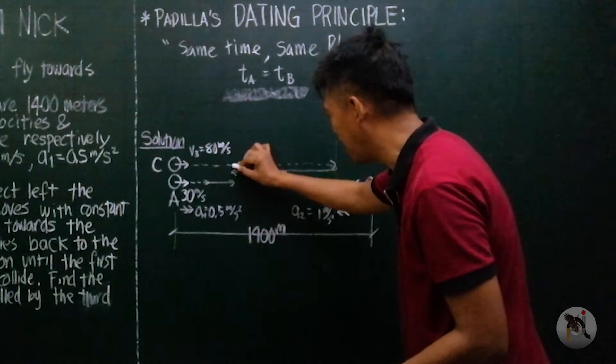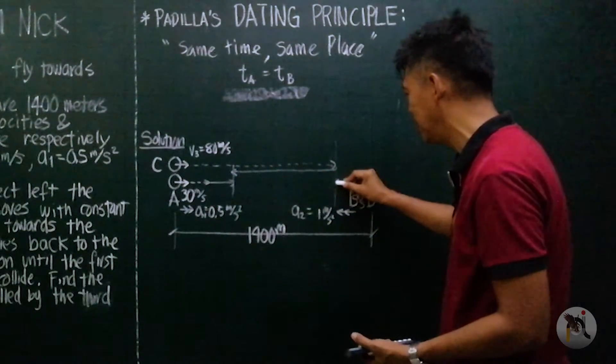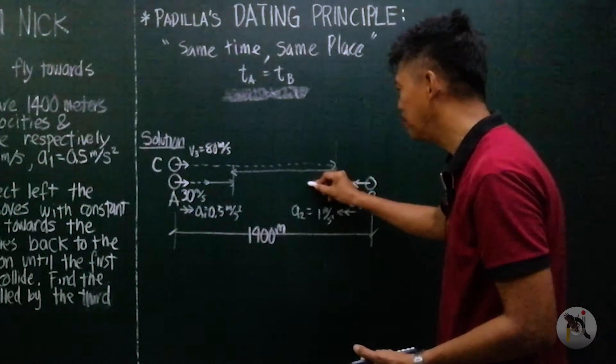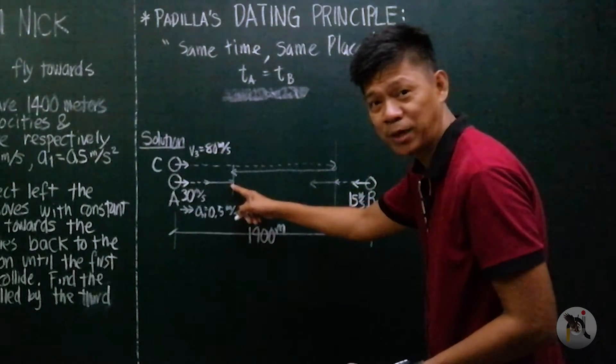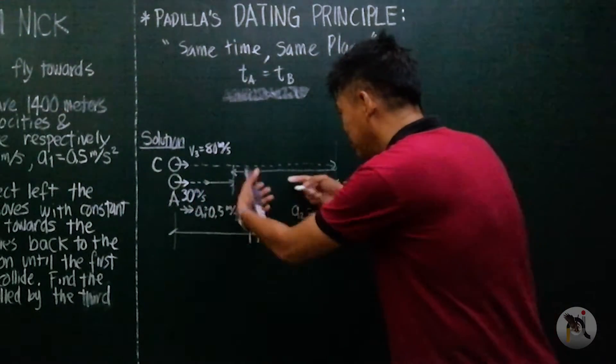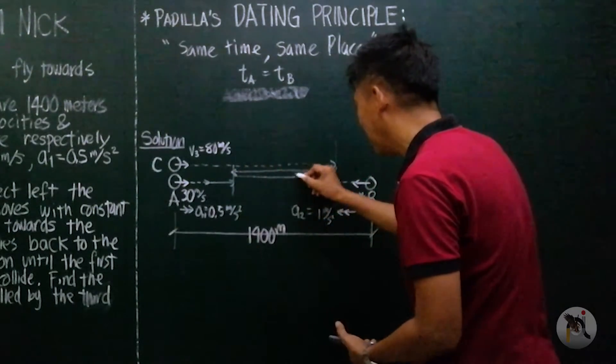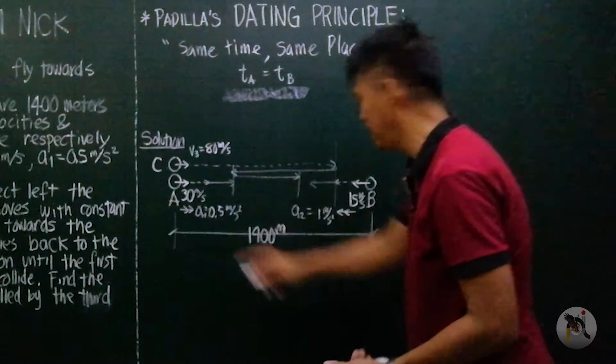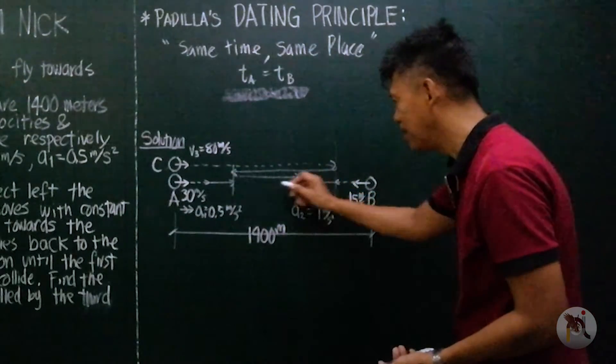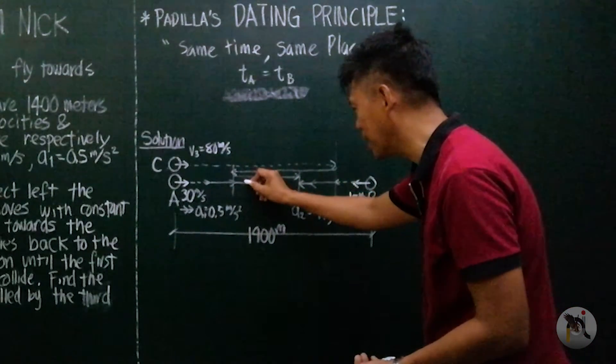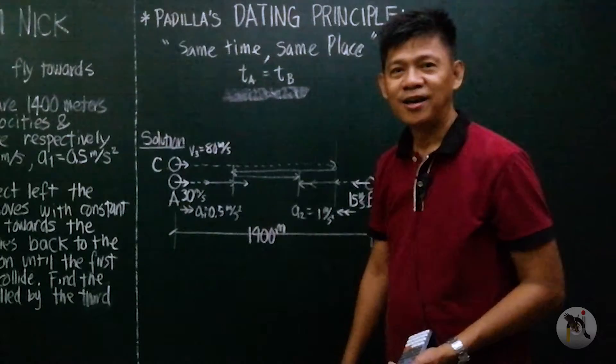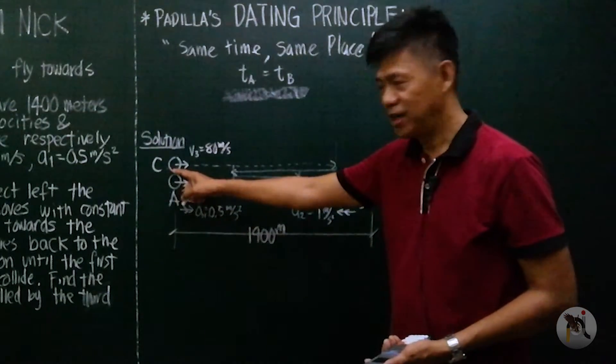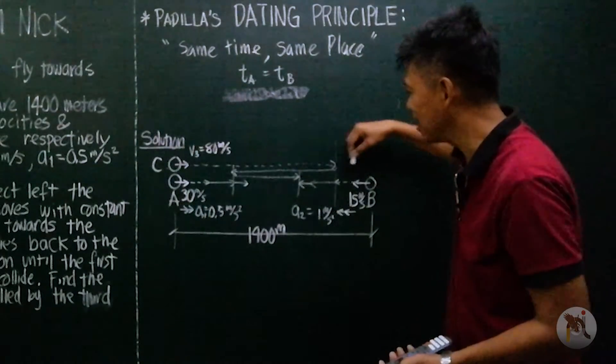Then this will continue to move and this will come back. And by this time, this object C will have met object A. They will continue to move until object C meets object B. By this time, object A is here. So the movement of C is back and forth.